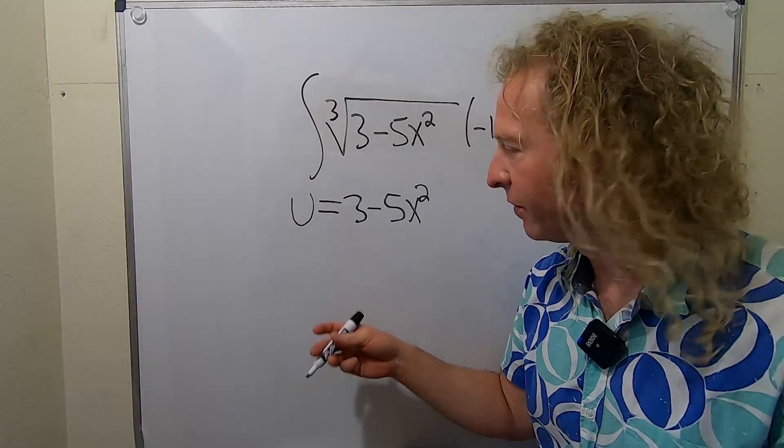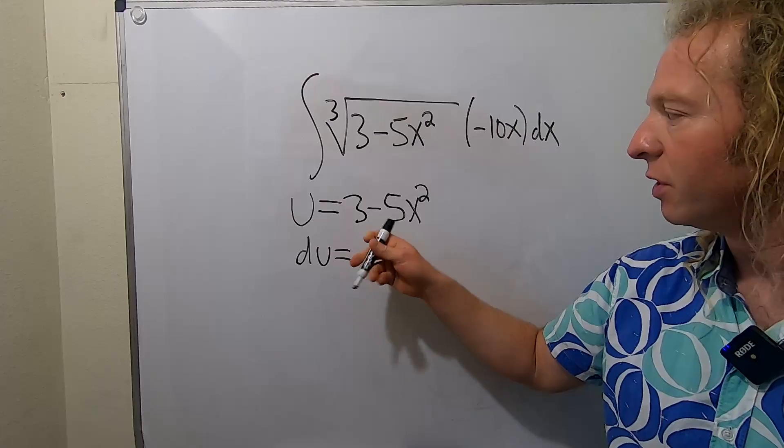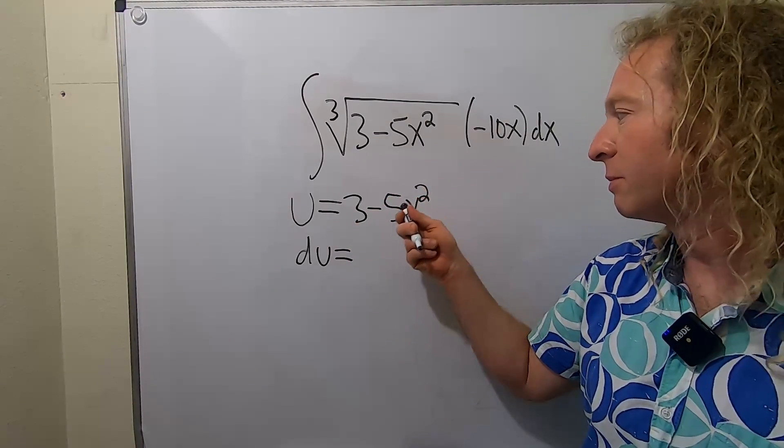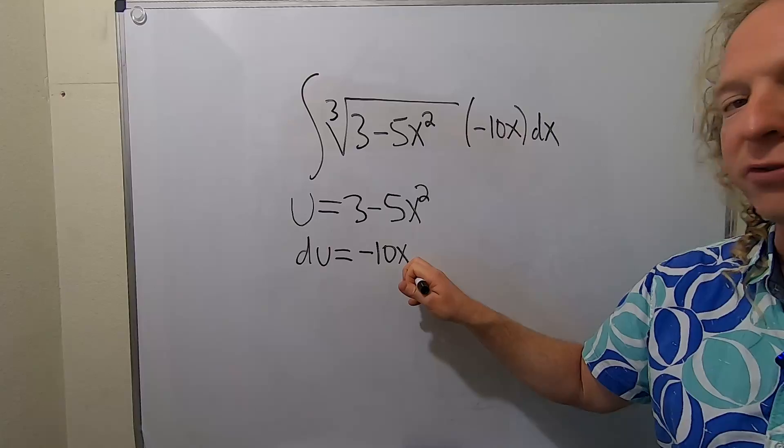Then you take the derivative, so du is equal to, this derivative is 0, 2 times 5 is 10, so this is negative 10x, and then don't forget the dx.